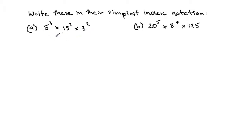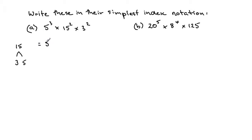Looking at 5, that's already a prime number. For 15, we use a factor tree: 2 doesn't go into 15 but 3 does, and 3 times 5 is 15. So the expression becomes 5 cubed times, and we substitute 15 with 3 times 5, all squared, and we already have 3 squared at the end — 3 is already a prime number.